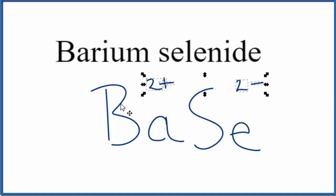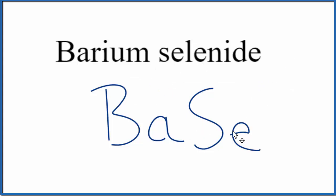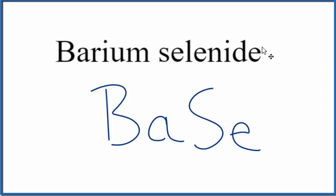So this is the formula for barium selenide. If you were given the formula BaSe and asked to write the name, you'd know that you have barium and selenium, so you would call it barium selenium — but you'd change the ending to -ide on the selenium, giving you barium selenide.